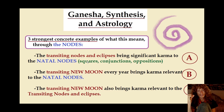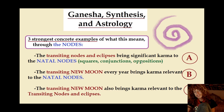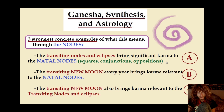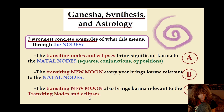There's the transiting nodes and eclipses themselves — they bring significant karma to the natal nodes. So the transiting nodes to the natal nodes: squares, conjunctions, and oppositions. There's also the transiting new moon in relation to the natal nodes, and the transiting new moon in relation to the transiting nodes and eclipses. Those are three different things, and I'm going to show you little examples here and later go into more detail.